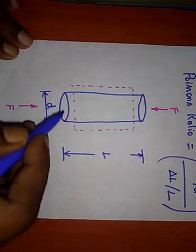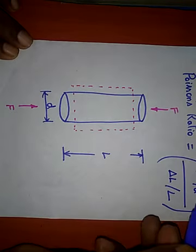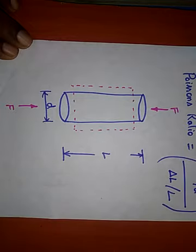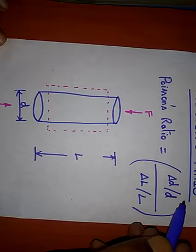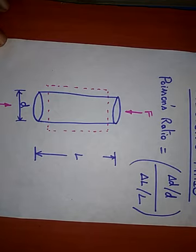So we must note down the change in diameter and change in length. Substitute in this formula to get Poisson's ratio. So Poisson's ratio is nothing but change in diameter to the original diameter divided by change in length to the original length.